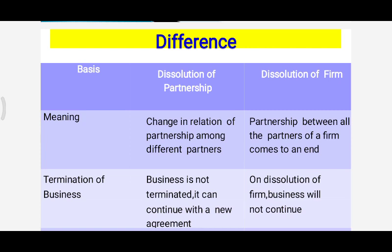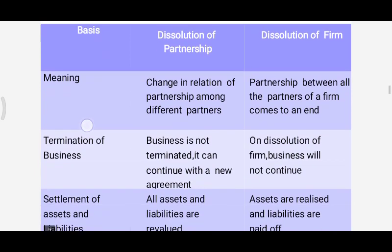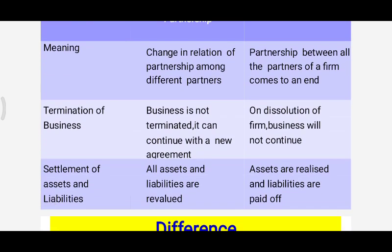The next basis of difference is termination of business. Under dissolution of partnership, the business of the firm is not terminated — it can continue with a new agreement, though the old agreement comes to an end. In dissolution of firm, the business of the firm is finally terminated and it cannot continue its business.